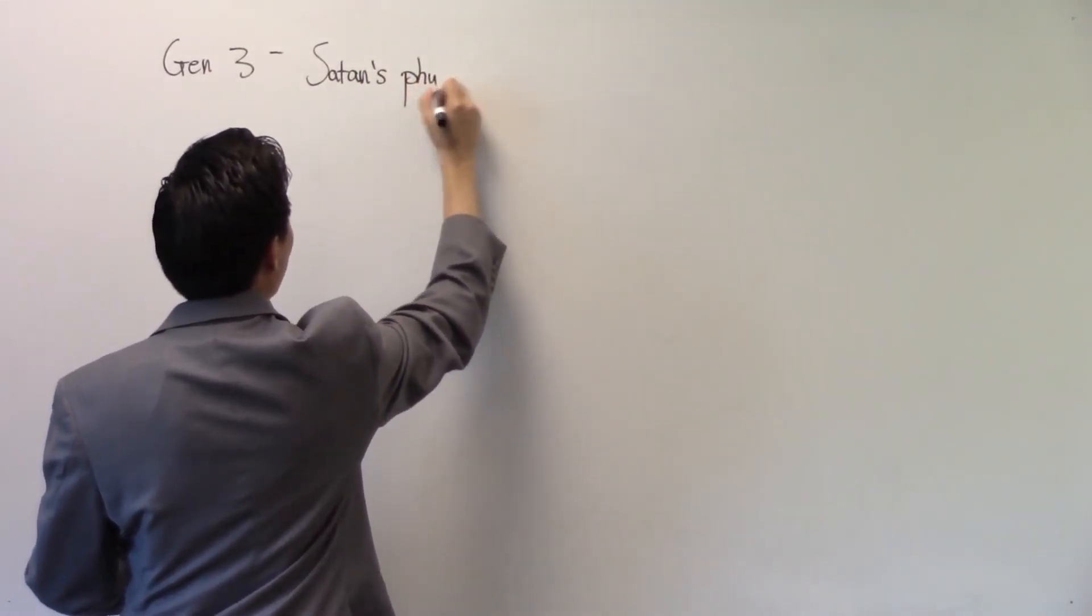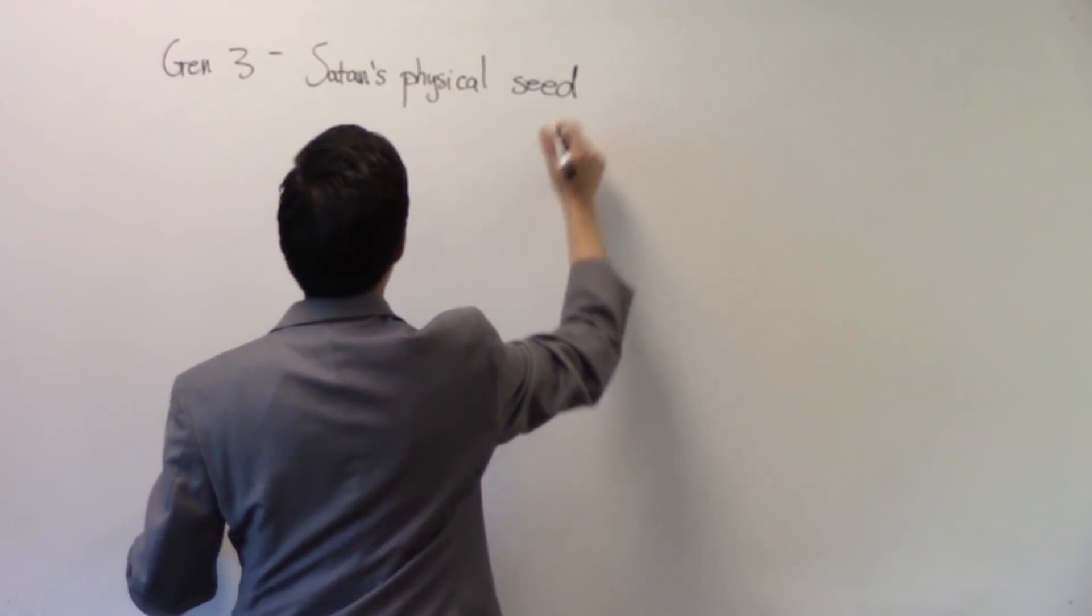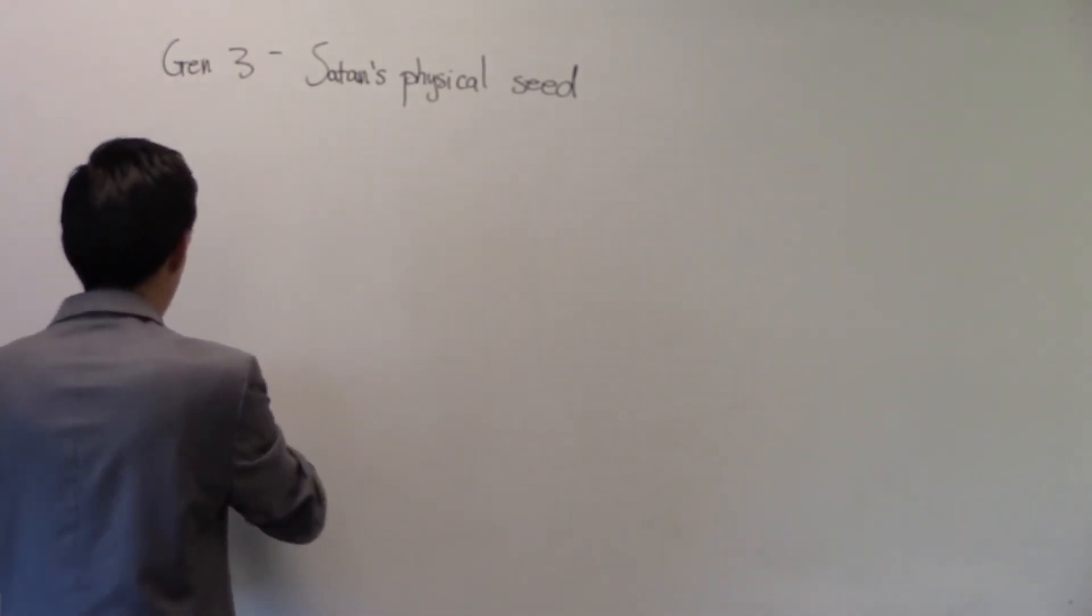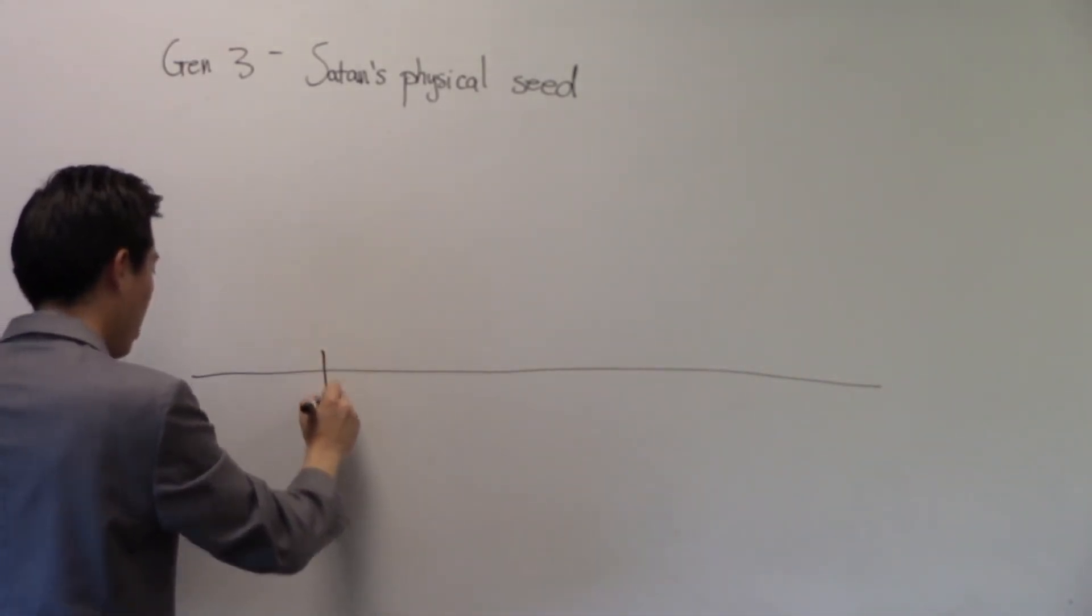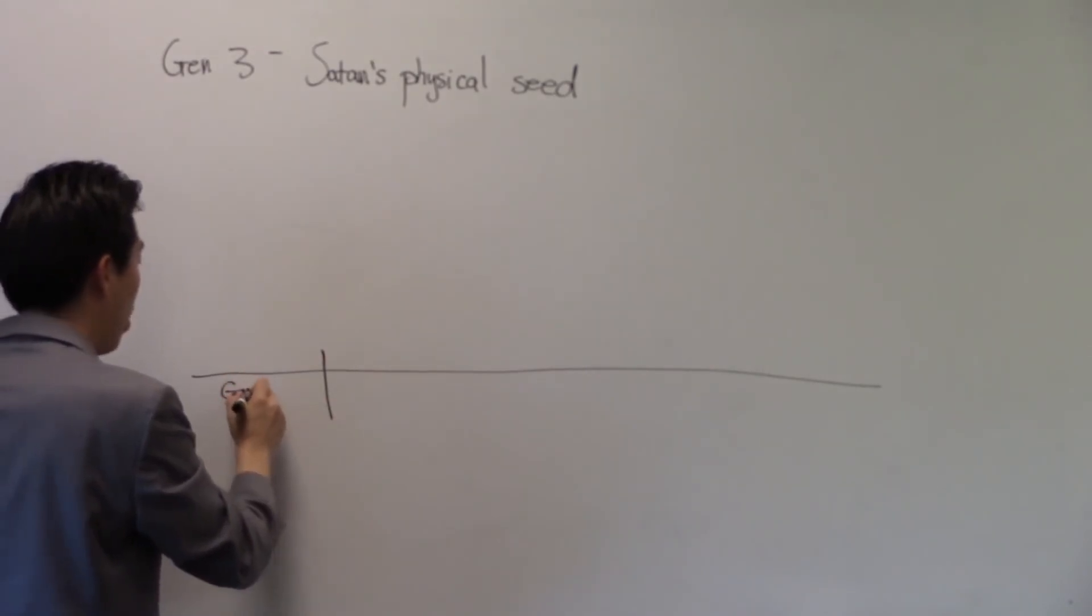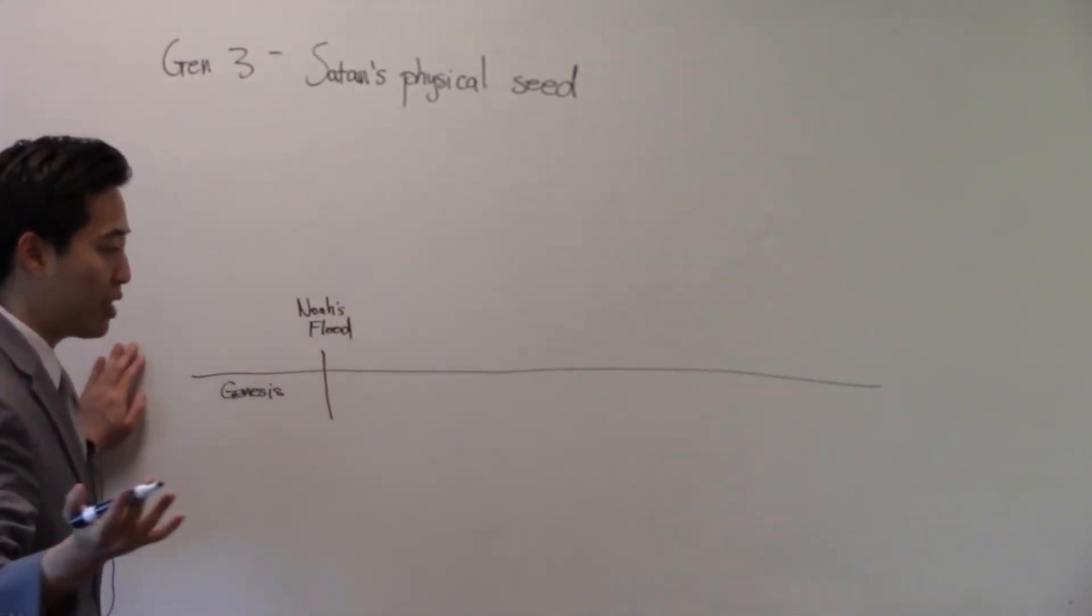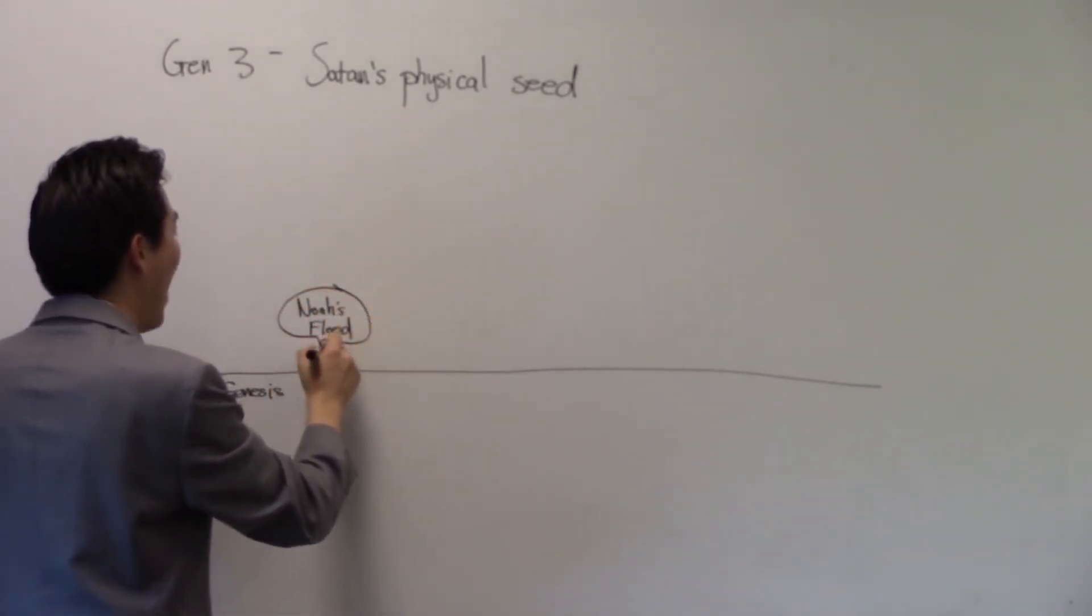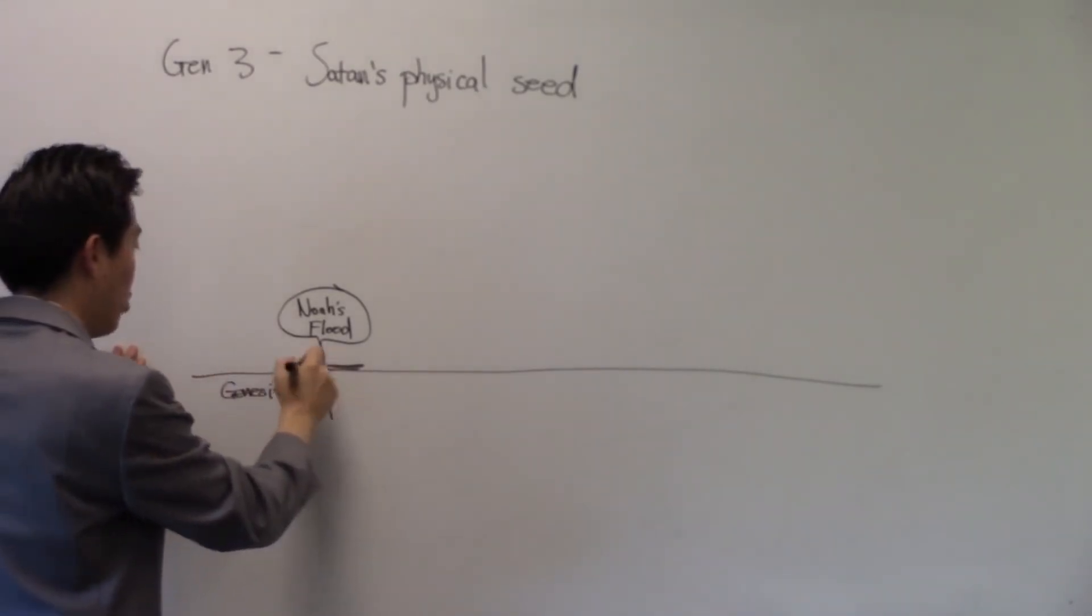This is like a literal physical seed. Satan clearly has a physical seed. The only thing is we don't know who they are or what they are. But there's no doubt there is a physical seed that Satan has. In the Bible, we see it clearly back at Genesis. In the days of Genesis up till Noah's flood, it was very clear at Genesis chapter 6 that Satan had his own physical seed running around because the sons of God intermingled with the daughters of men. That's why the Bible says Noah's flood had to wipe out all flesh.